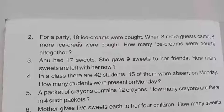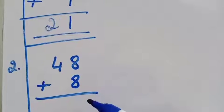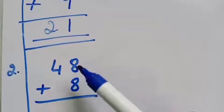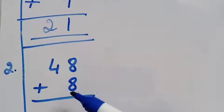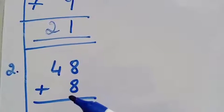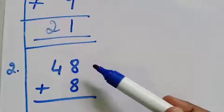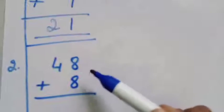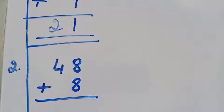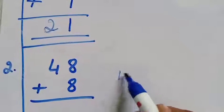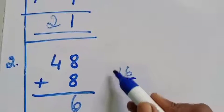Let's do the rough work. We write 48 plus 8. This is the 1's place and this is the 10's place. They brought 48 ice creams first, then 8 more for 8 extra guests. Now 8 plus 8: keep one 8 in mind and count on — 9, 10, 11, 12, 13, 14, 15, 16. We got 16. So we write 6 in the 1's place and carry over 1 to the 10's place.